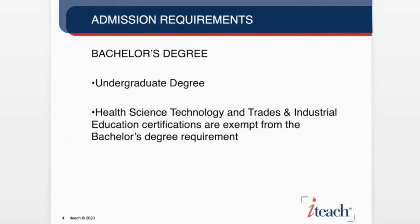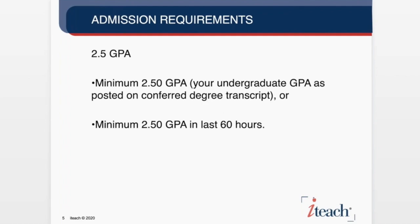Work on Course 5000 and send us your transcripts at the same time. When we get your transcripts, there are a couple of things we need to see. We need to see that you have an undergraduate degree from an accredited institution of higher education. There is a nuance — health science technology only requires an associate's degree, and trades and industrial education can be exempt from the bachelor's degree requirement with the appropriate professional license and work experience. We also need to confirm a 2.5 GPA. If your posted graduating GPA is 2.5 or higher on your final transcript, that suffices for that requirement.